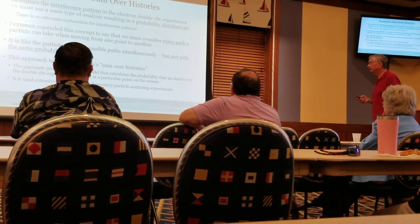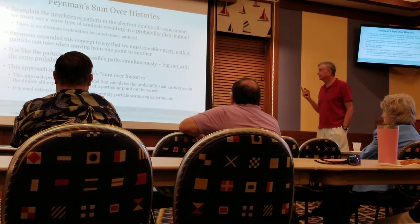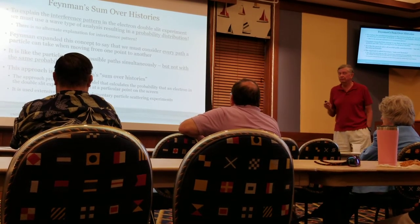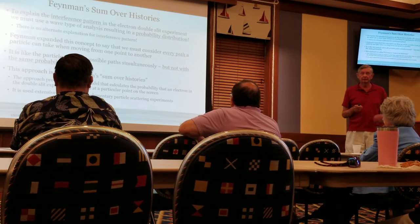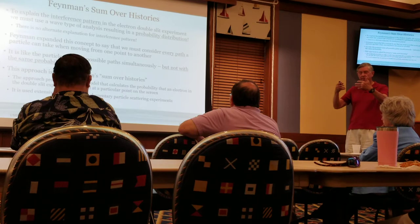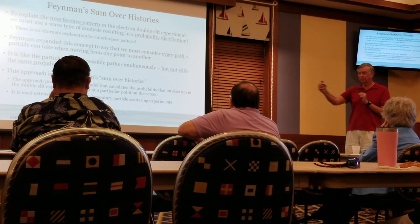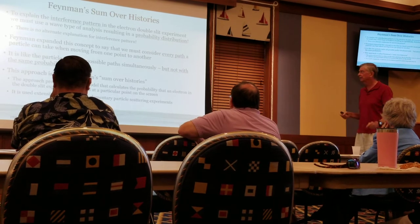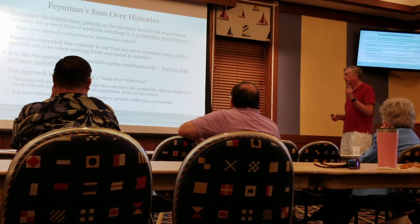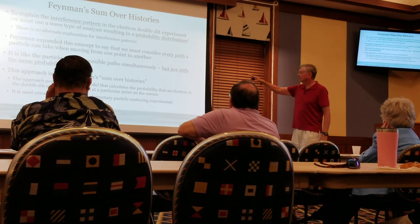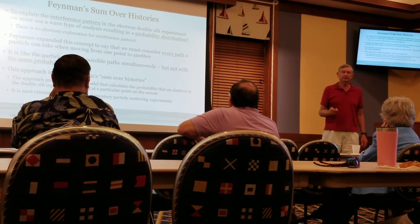Feynman expanded this concept to say we must consider every path a particle can take in moving from one point to another. With the electron double-slit experiment, we must consider that the electron could go through one slit or another slit — every possible path it could take. Not only that, the particle takes all possible paths simultaneously.